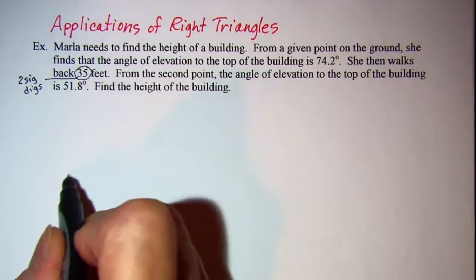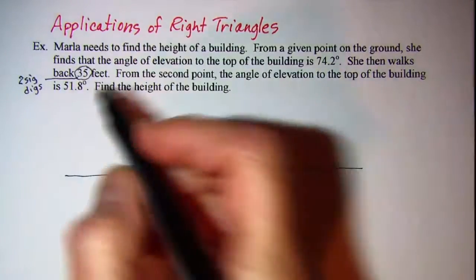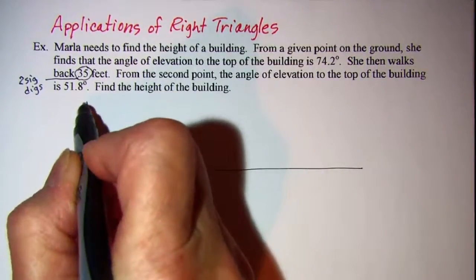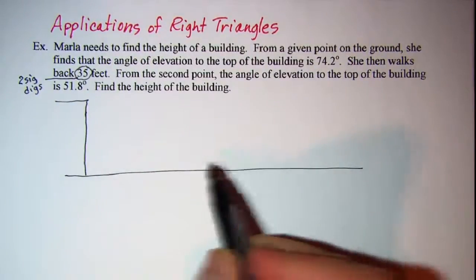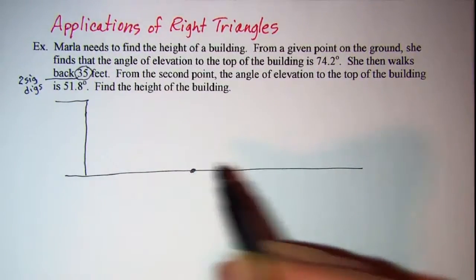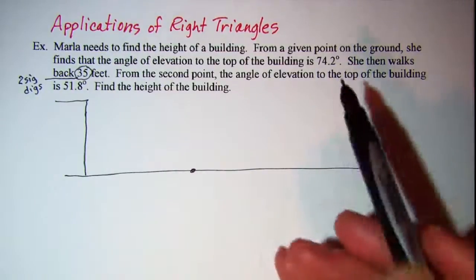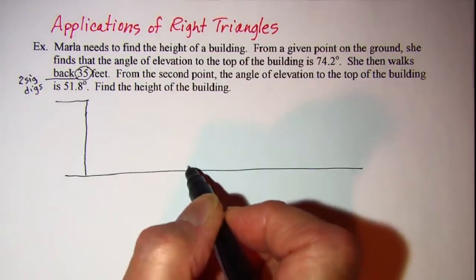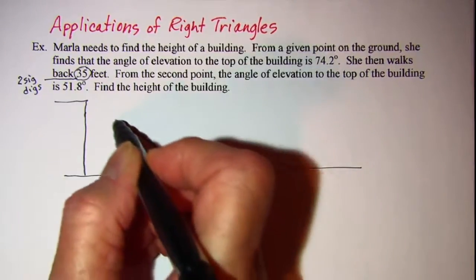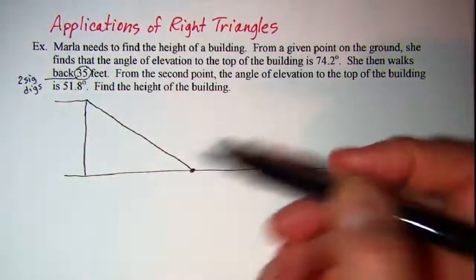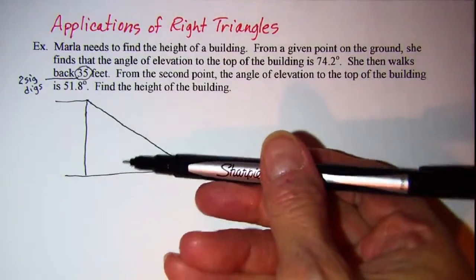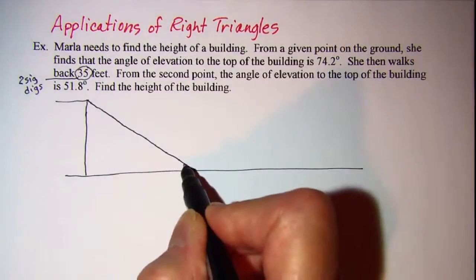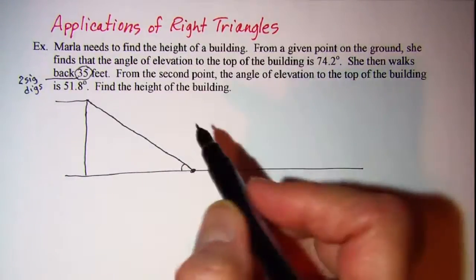Alright, so here's the ground and here's the building and we're putting Marlin here. The angle of elevation to the top of the building—remember angle of elevation starts from the horizontal and goes up—so this angle right here is 74.2 degrees.